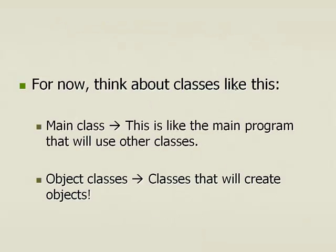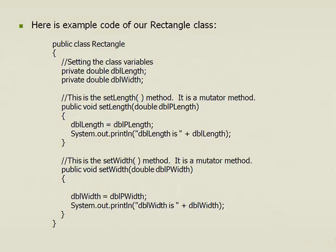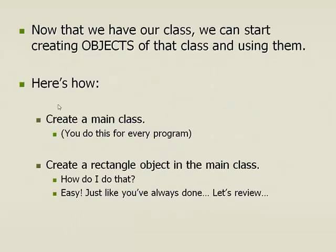Think about classes like this: you've got a main class — this is like the main program — that will use the other classes, and then you've got object classes, which are classes that will create objects. Here's an example of a rectangle class. We did this during our demonstration today. If you haven't seen the demonstration, please check it out. Now that we have our class, we can start creating objects of that class and using them.